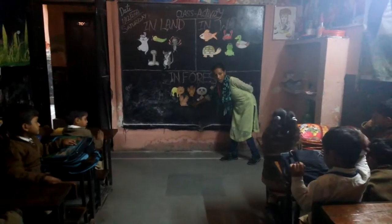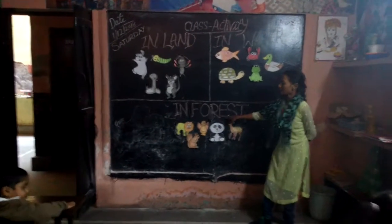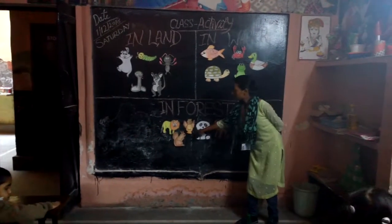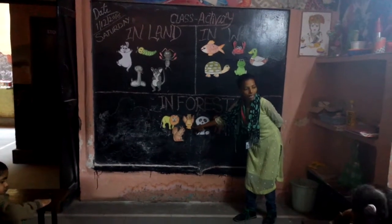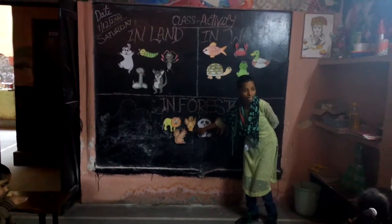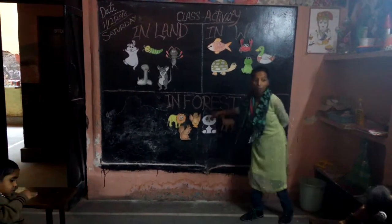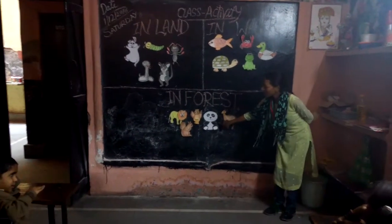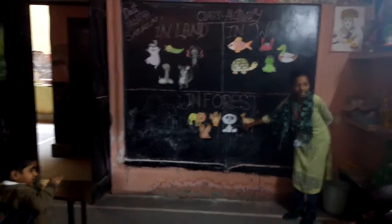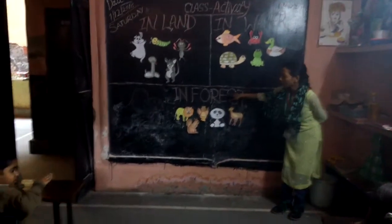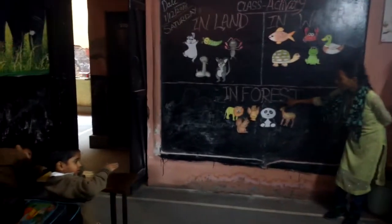This is crab. Crab lives in forest. This is bird. Bird lives in forest. This is panda. Panda lives in forest.